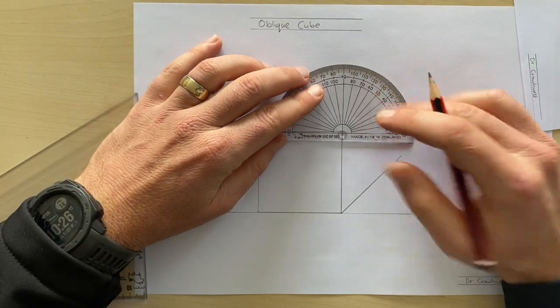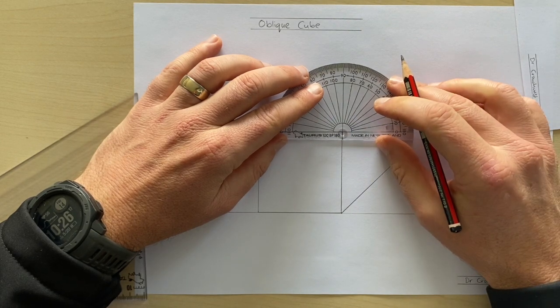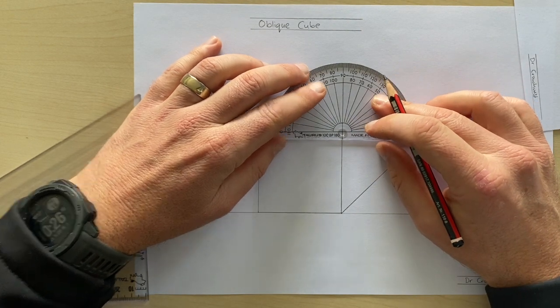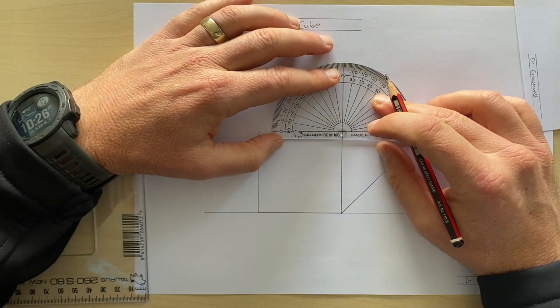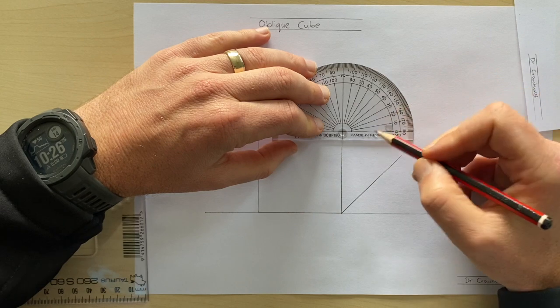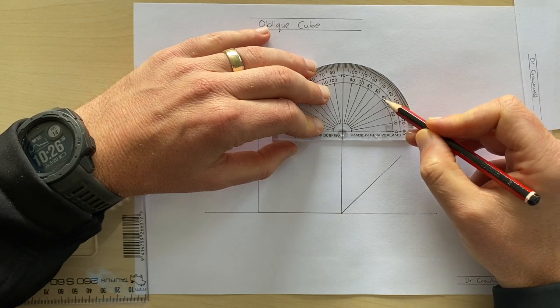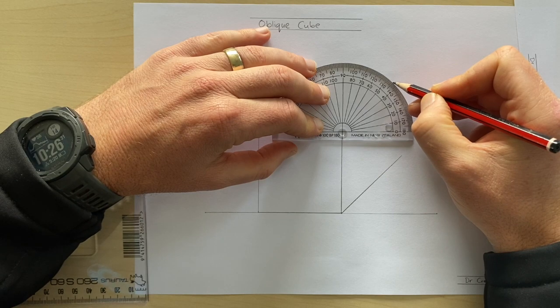So I make sure I line up this line here with my vertical edge on the front face and I line this line up over here. Then I'm going to start again from here: zero, 10, 20, 30, 45, and mark it.